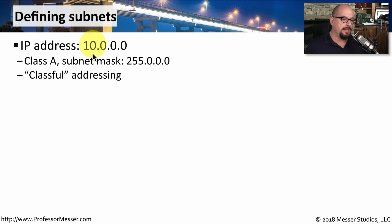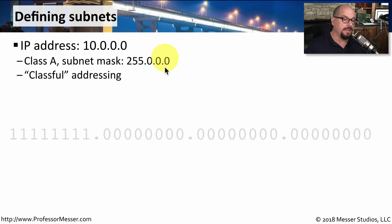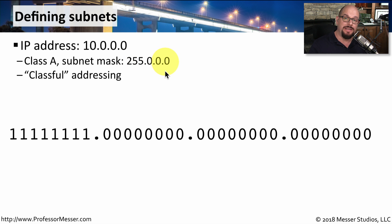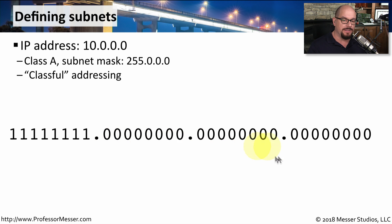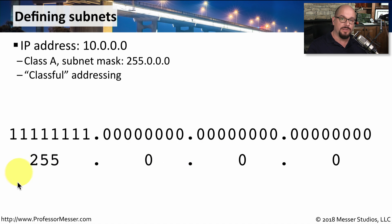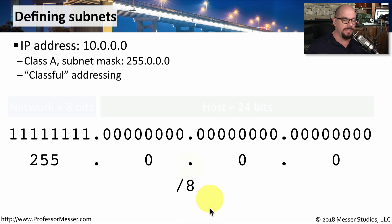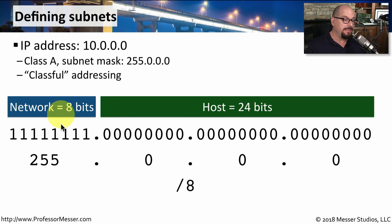Let's see how we could take a traditional class A subnet mask and customize it for our network. We'll start with the network 10.0.0.0. Its traditional class A subnet mask is 255.0.0.0. You'll sometimes see this referred to as classful addressing, because it's based on that class A subnet mask. If we were to write out the subnet mask in binary, you would have eight ones at the beginning and all zeros after that. In decimal, the subnet mask is 255.0.0.0, or a /8 subnet mask. Based on the subnet mask, we have eight bits dedicated as the network address and 24 bits dedicated as the host address.